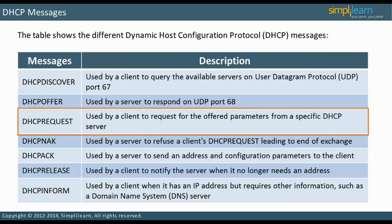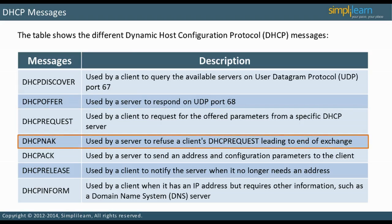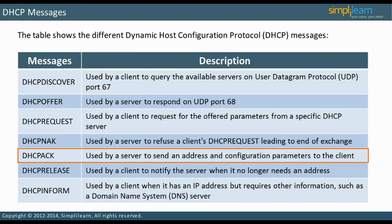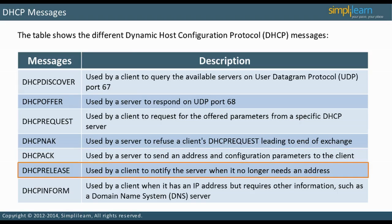The client then requests the offered parameters from the particular DHCP server with DHCP Request. If the server refuses a client's request, it sends a DHCP No Acknowledgement, or DHCP NAK, and the exchange ends there. Otherwise, the server sends an address and other configuration parameters to the client with DHCP ACK.